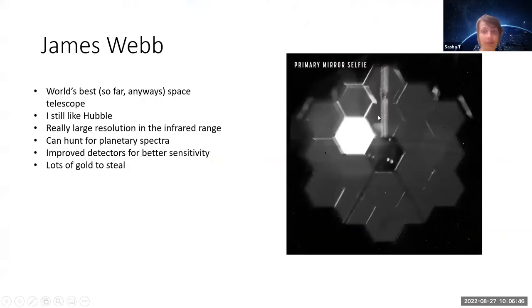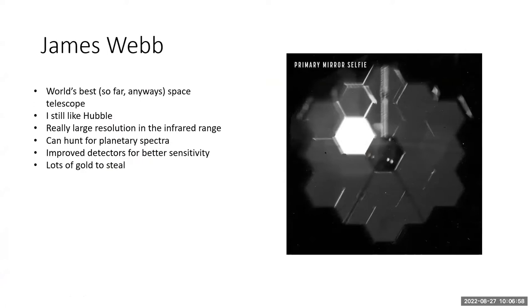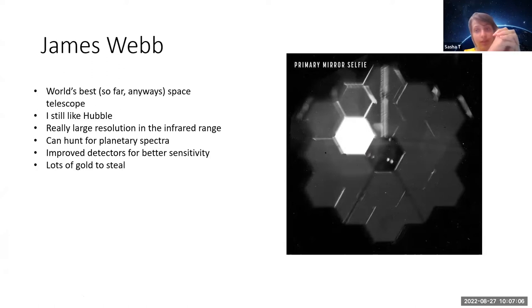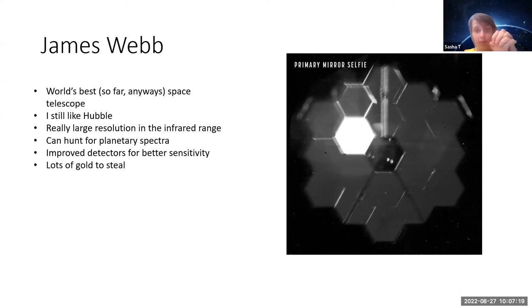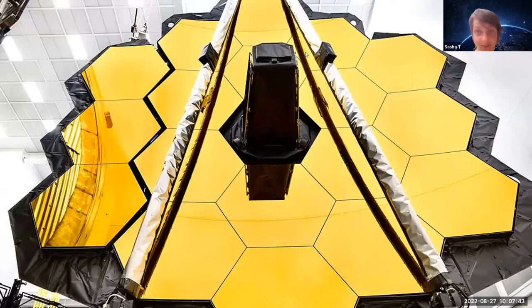First, James Webb itself — most people say it's the world's best space telescope. It has great resolution in the infrared range, and it can hunt for planetary spectra. This is particularly important to us as astrobiologists because it can determine the composition of planetary atmospheres, helping us figure out whether life could arise on a planet, or whether life is already there. It also has improved detectors for better sensitivity and those giant gold-coated mirrors.